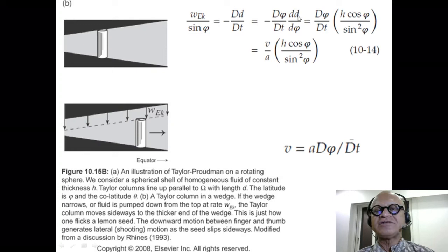So dφ/dt then can be written as V over A, and dD/dφ can be written as the derivative with respect to φ of H over sin φ, which gives you H·cos φ divided by sin² φ. D is H over sin φ. So that gives you V over A times H·cos φ divided by sin² φ, because D is H over sin φ.